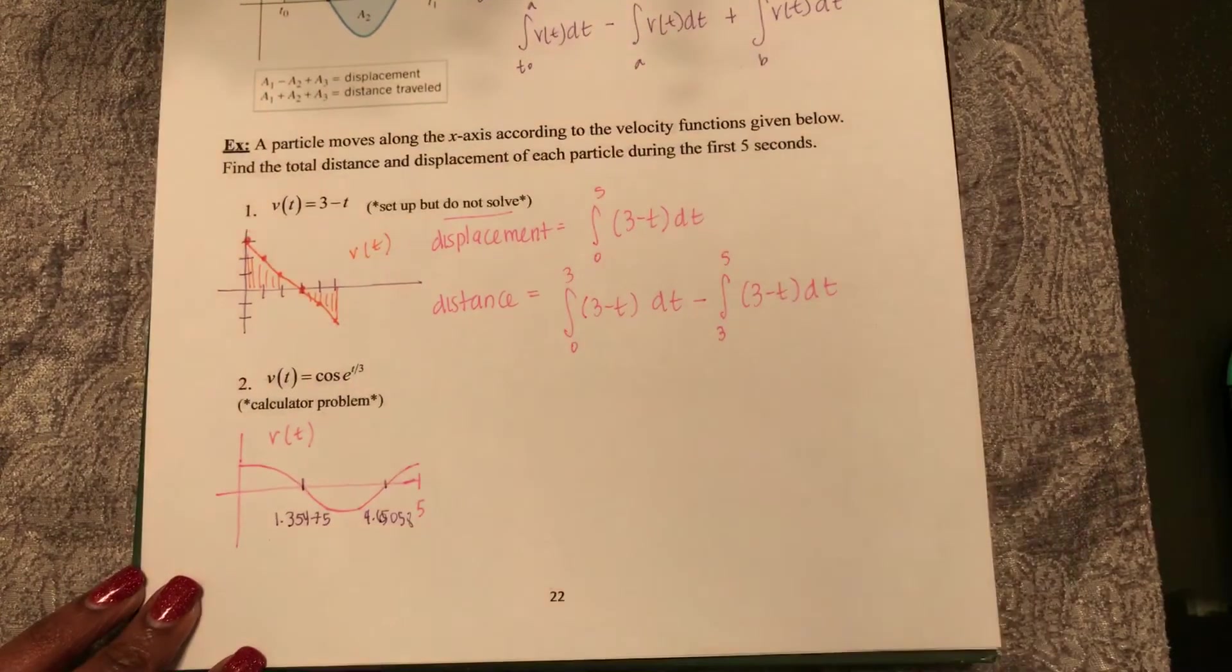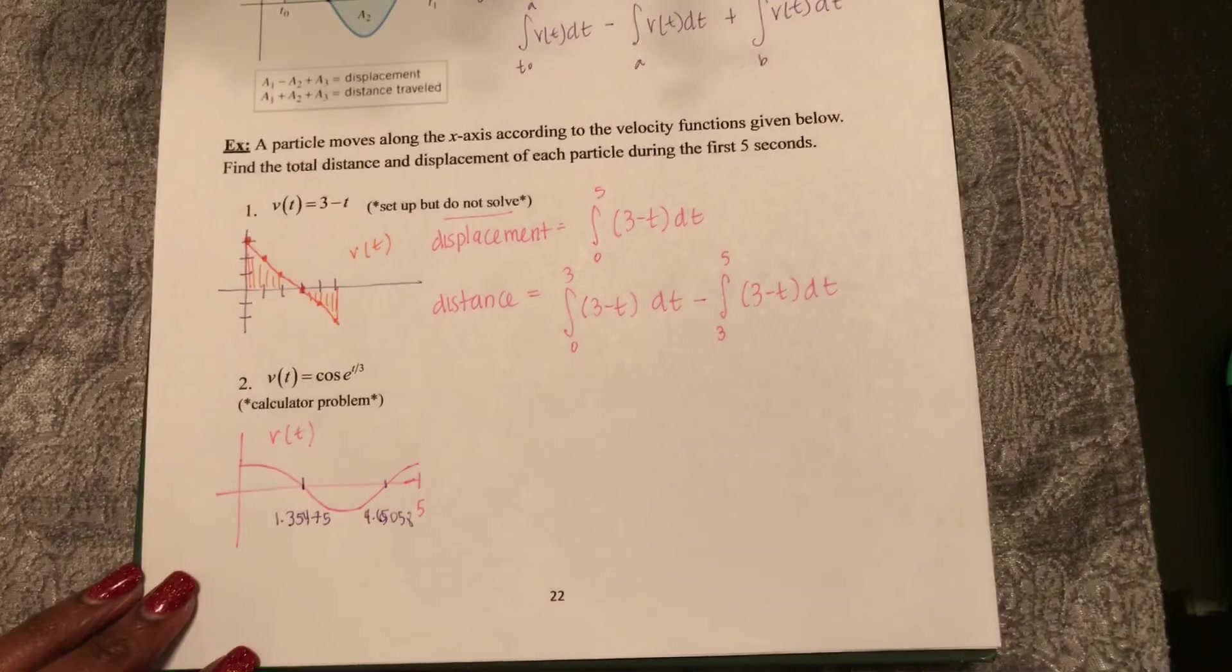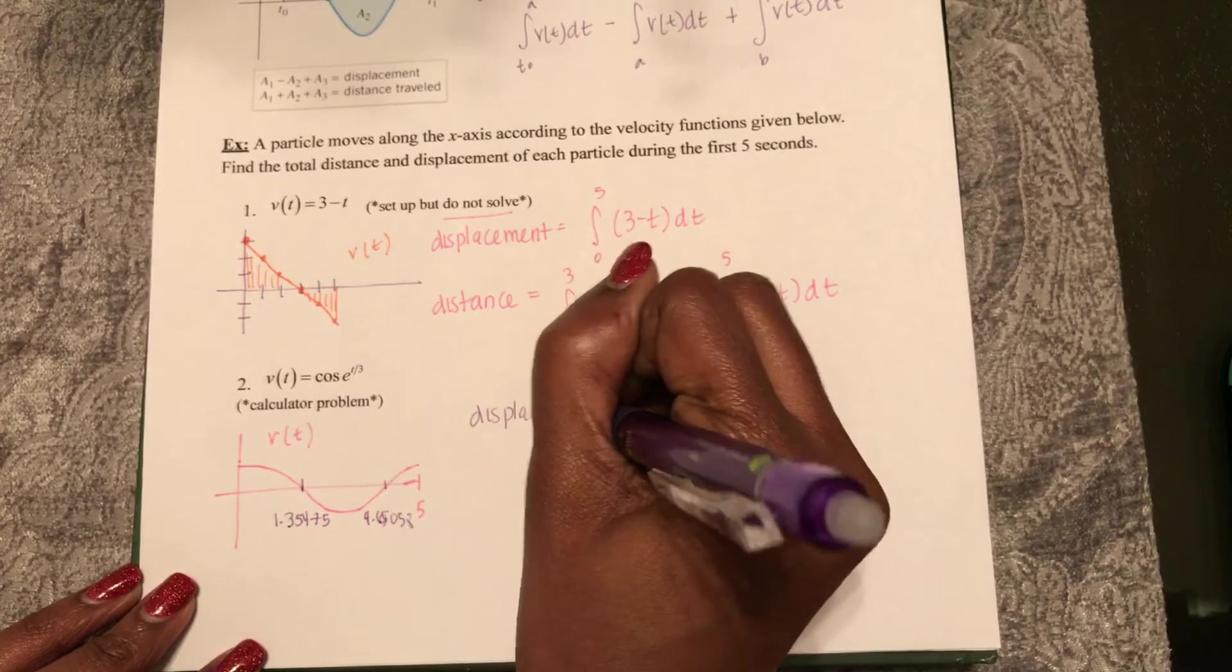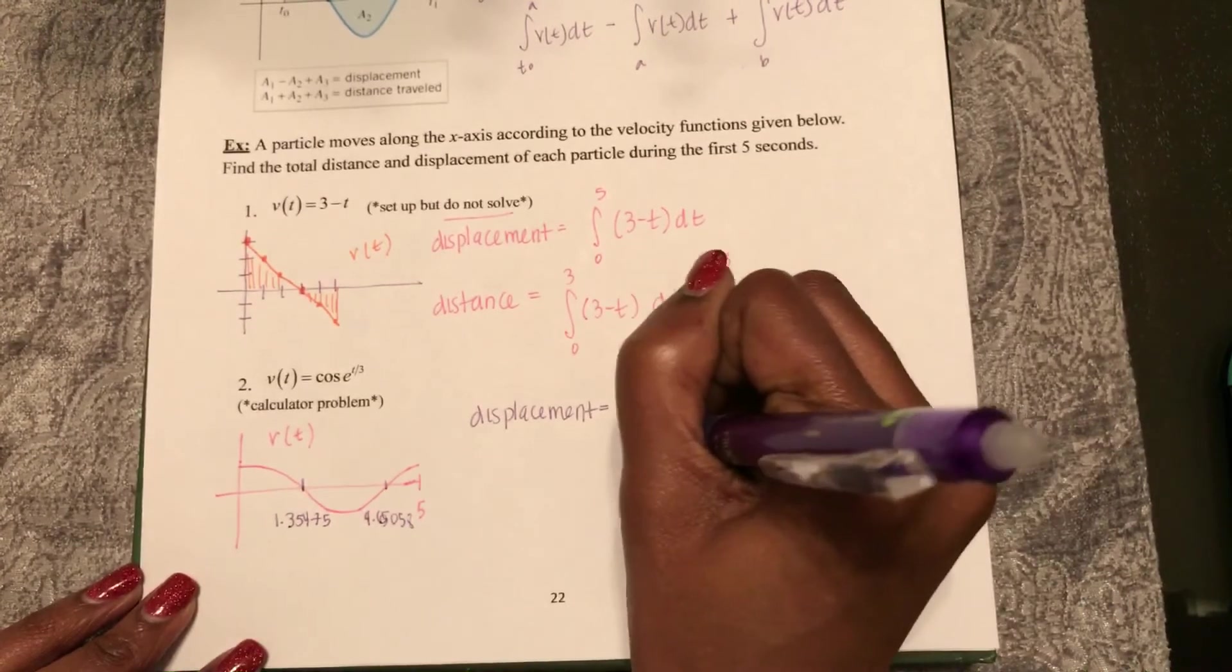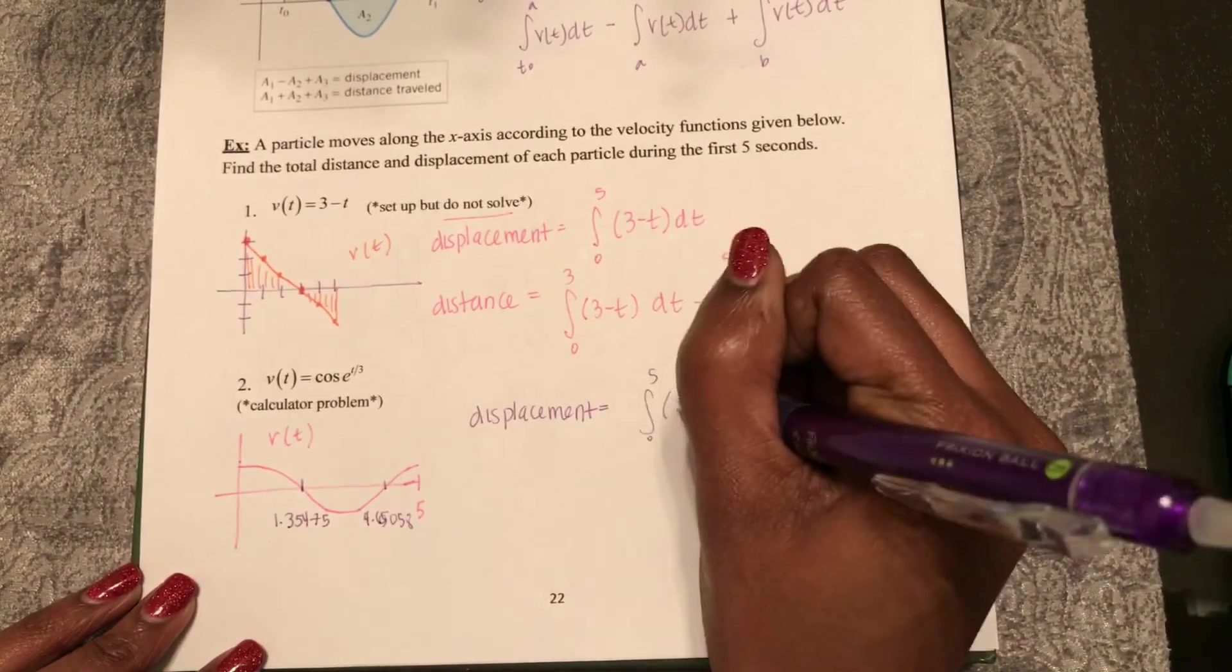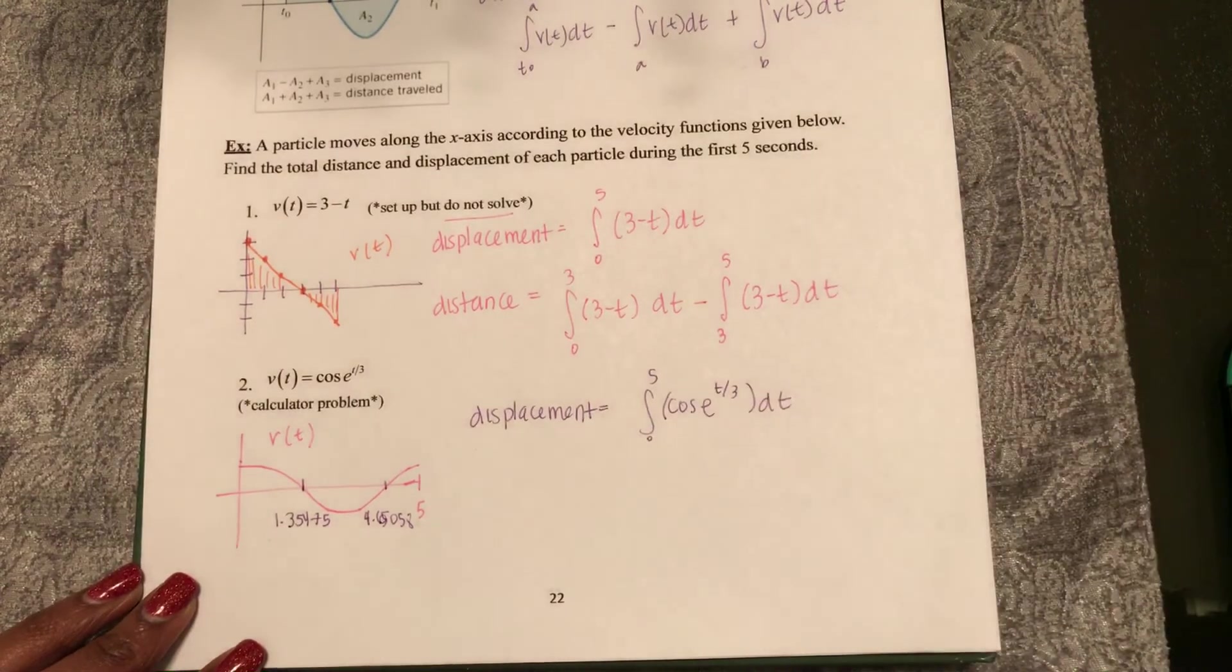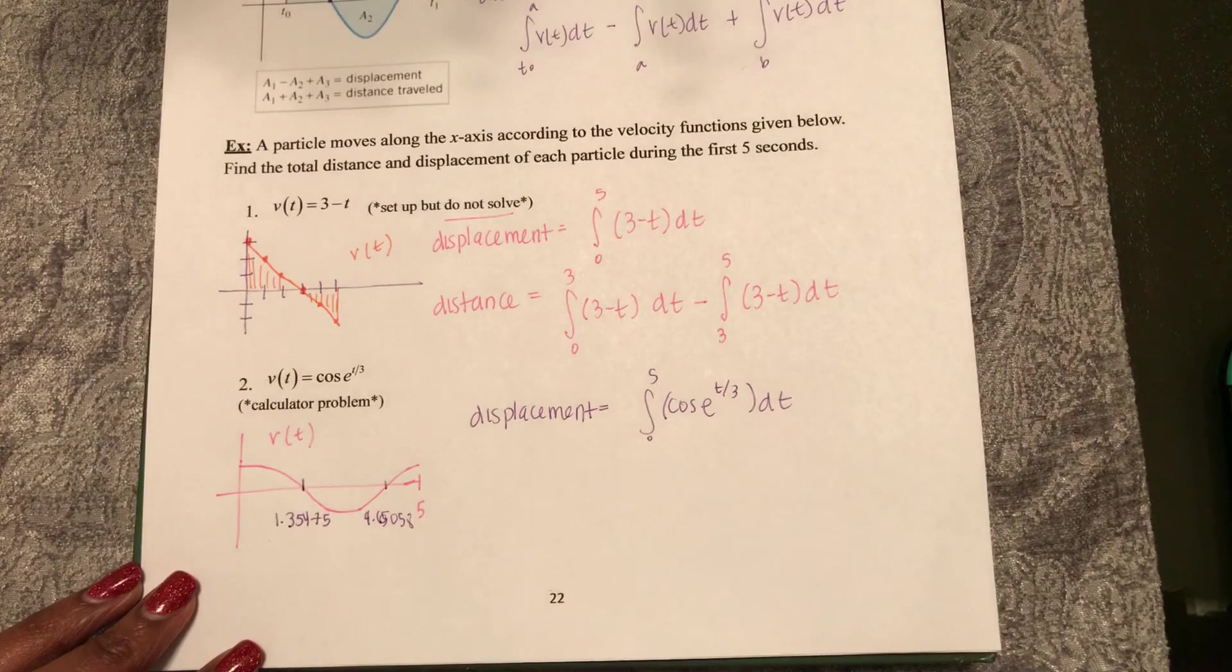So now that I see what's happening with my velocity function, first displacement is easy. It's the integral from 0 to 5 of my velocity function dt. And to save some time I'm not going to write it out either.